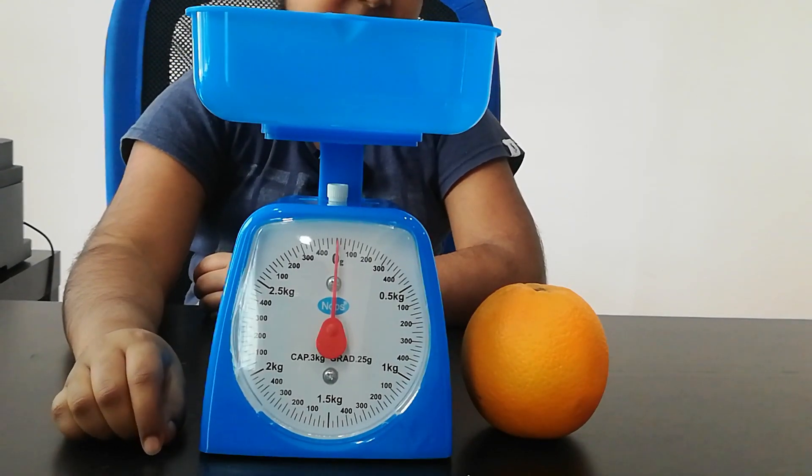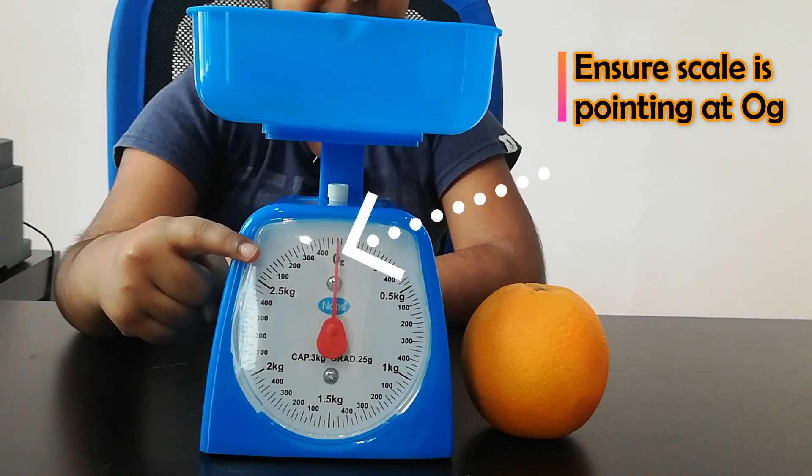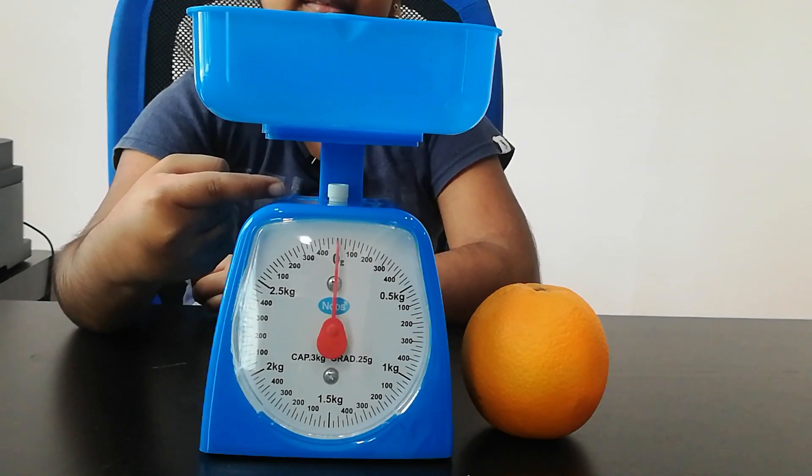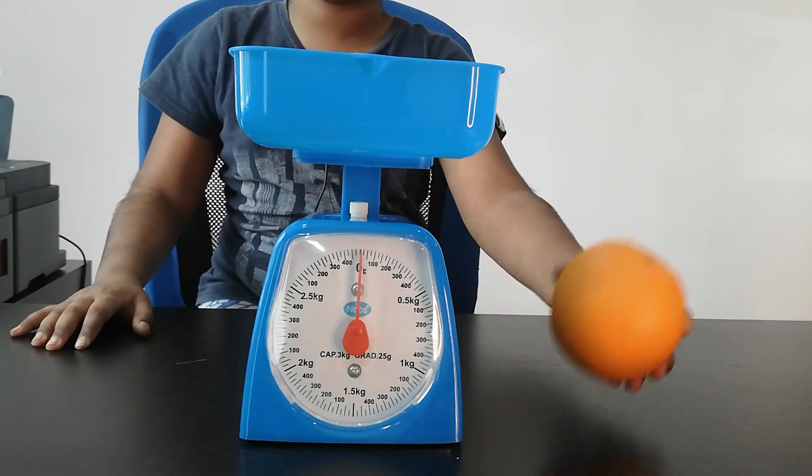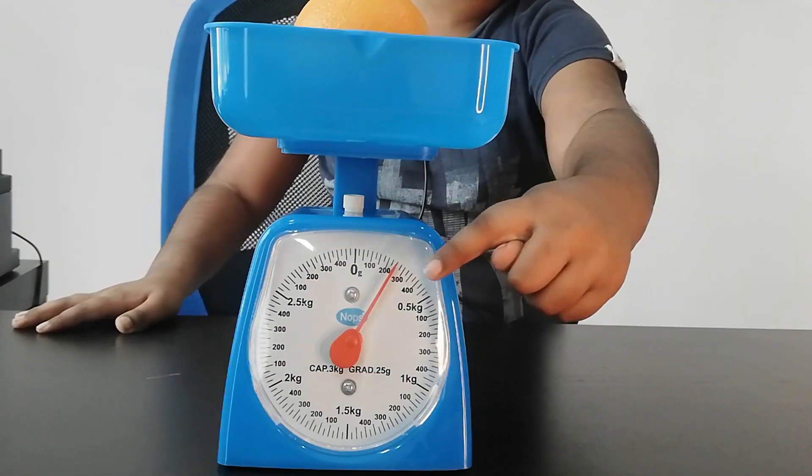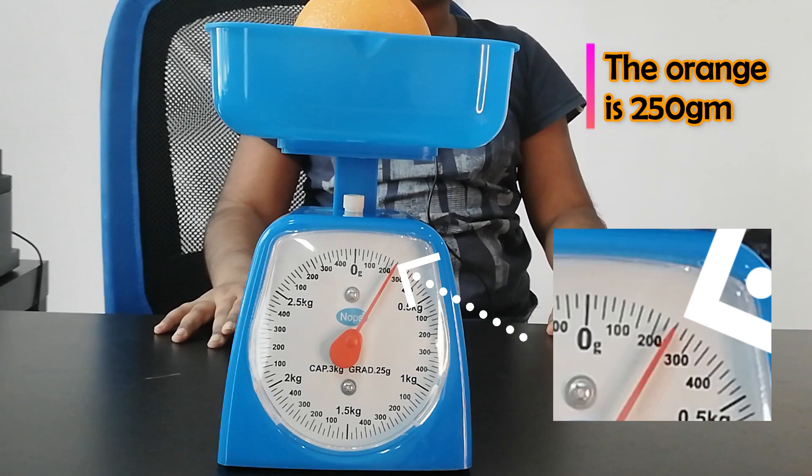Before you measure, ensure that the scale is pointing at 0 gram. If not, you'll need to adjust it. We are going to weigh the orange now. Check out the reading. The orange is 250 gram.